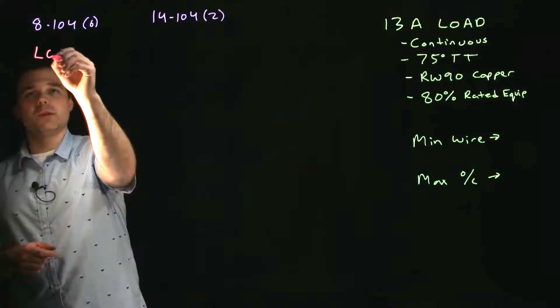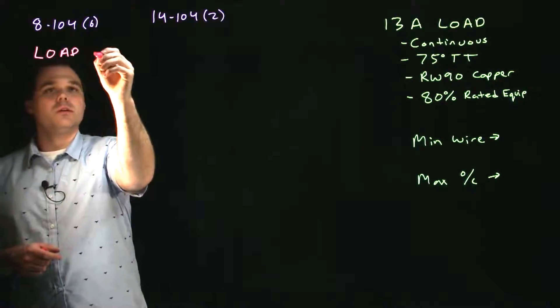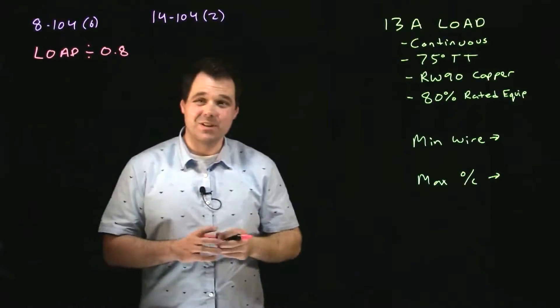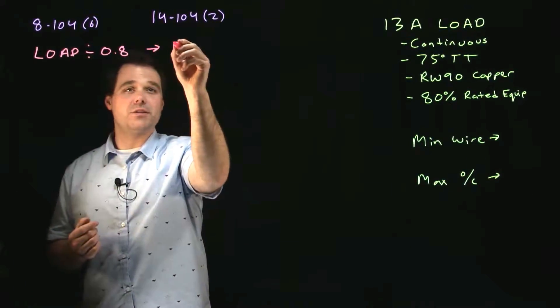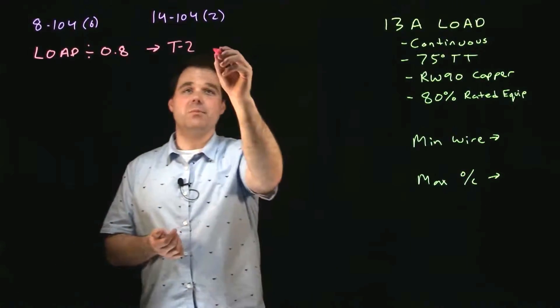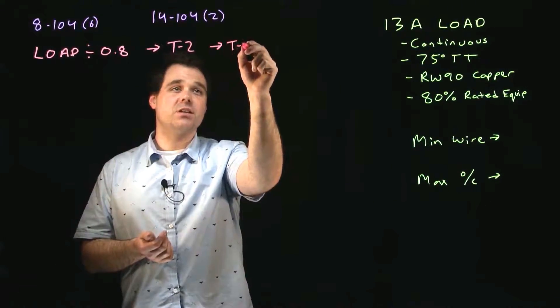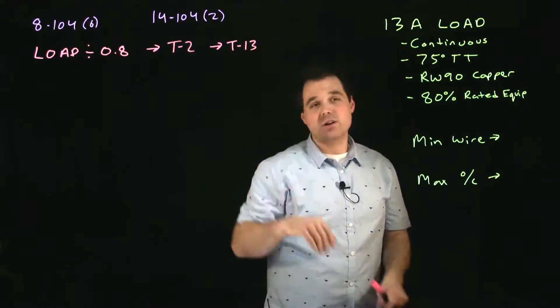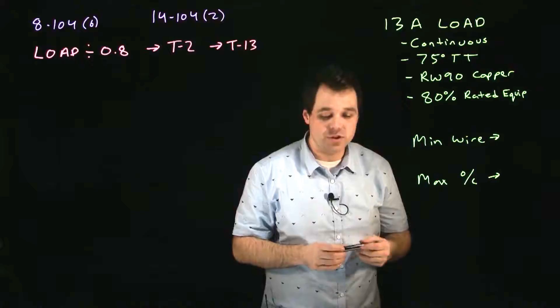So the process is going to be I'm going to take my load divide it by 0.8. Once I do that I'm going to go to table 2 in this case and size my wire. After that I'm going to go to table 13 and size my overcurrent. Now that's the general process we're going to actually see 14-104 sub rule 2 in effect today.